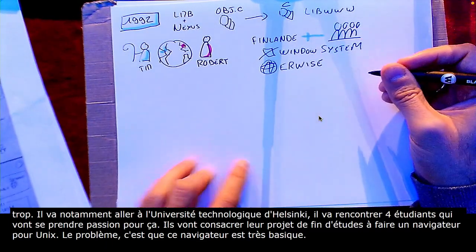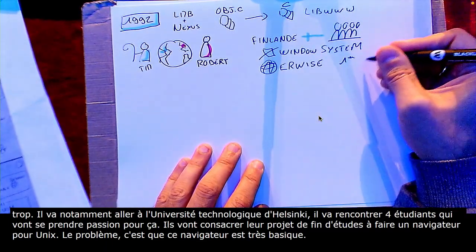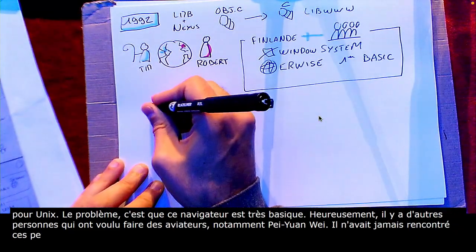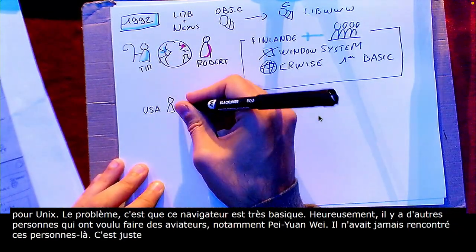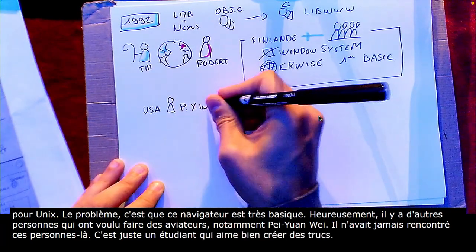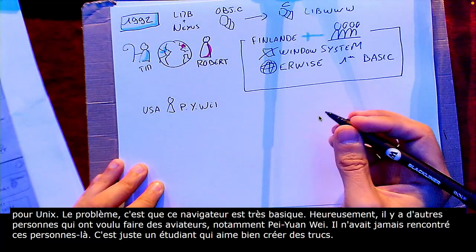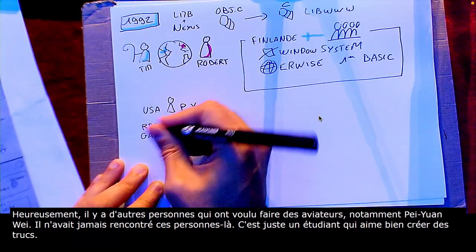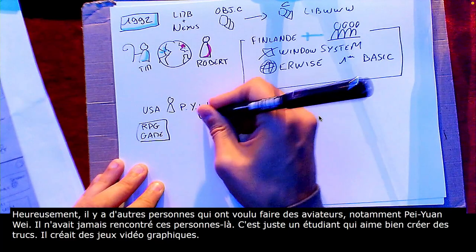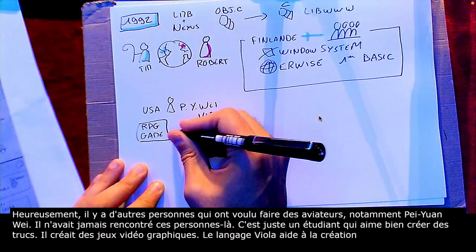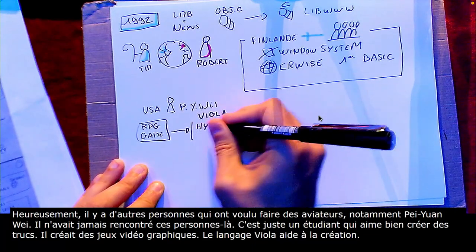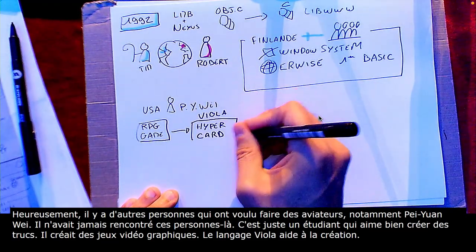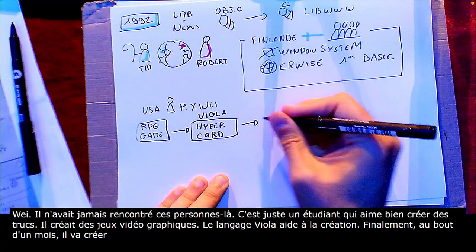Heureusement, il y a d'autres personnes qui ont voulu faire des navigateurs, et notamment Pei Wei. Pei Wei n'avait jamais rencontré ni Tim Berners-Lee, ni Robert Cailliau. C'est juste un étudiant de l'université de Berkeley qui aimait bien aussi les jeux vidéo. Il avait créé un langage de scripting orienté objet pour créer des jeux vidéo graphiques, un langage qui s'appelle Viola. Pei Wei va découvrir HyperCard, il va mettre une compatibilité HyperCard à Viola, puis HyperText, et finalement, au bout d'un mois, il va créer ViolaWWW, un nouveau navigateur, encore une fois pour Unix. Tout ça dans son coin.